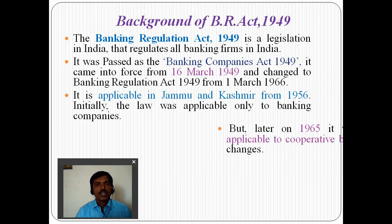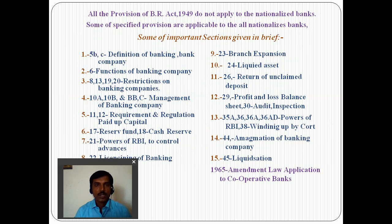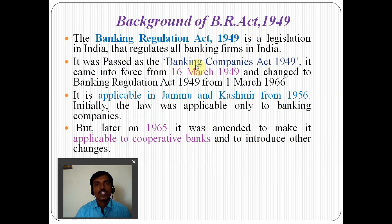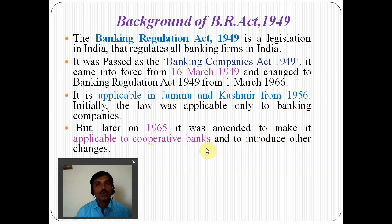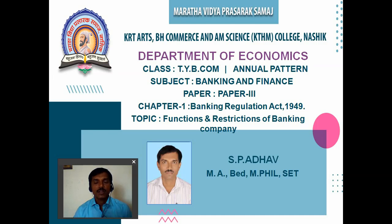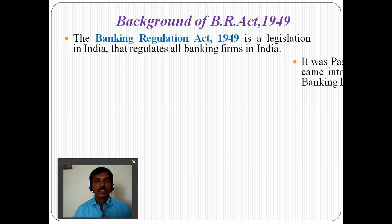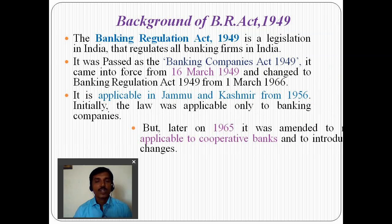So what we learn here is the background of the BR Act 1949. This Act came into existence in India on 16th March 1949. Some amendments were later applied to cooperative banks. This law is also applicable to Jammu and Kashmir from 1965, and in 1965 an amendment made this Act applicable to cooperative banks, which are an important part of the rural economy and agriculture.